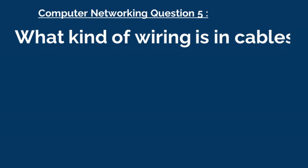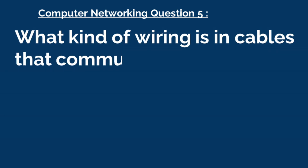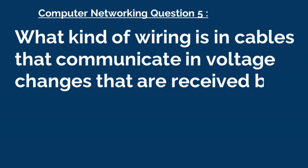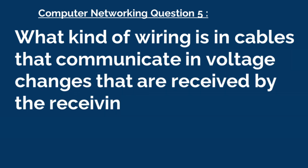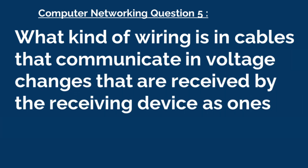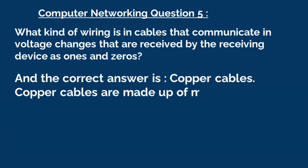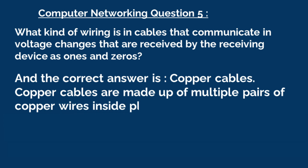Question 5: What kind of wiring is in cables that communicate in voltage changes that are received by the receiving device as ones and zeros? The correct answer is, copper cables. Copper cables are made of multiple pairs of copper wires inside plastic insulator.